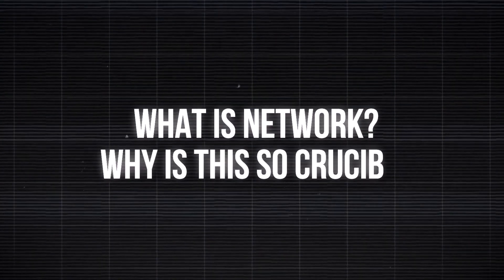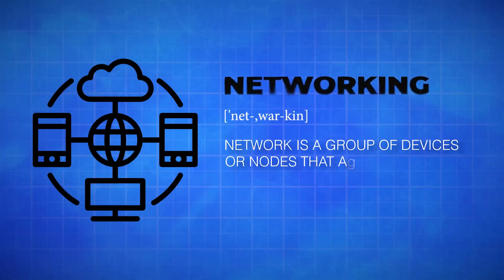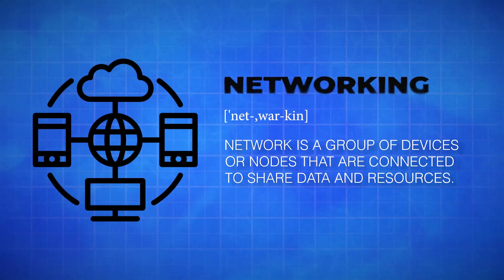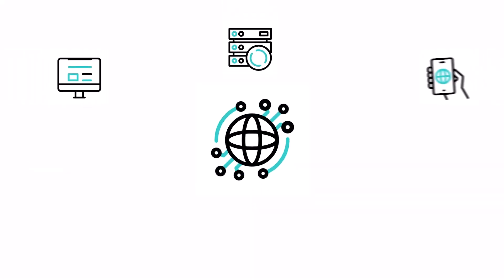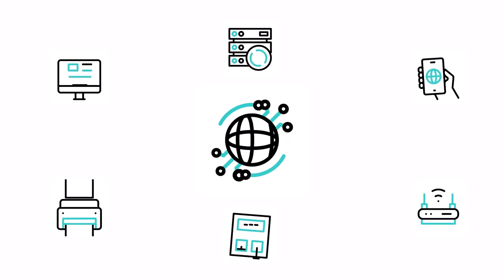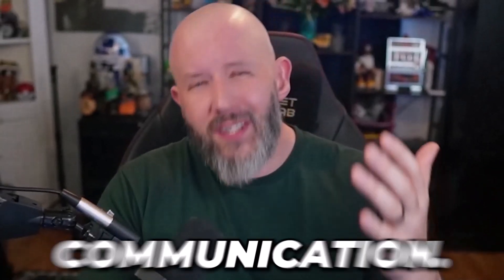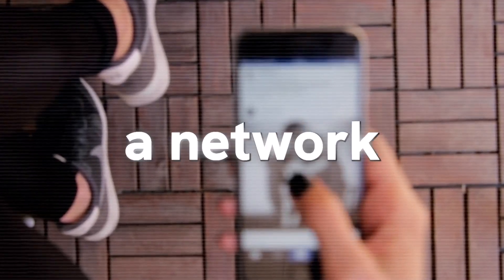But what exactly is a network and why is it so crucial? If you're studying for the CCNA or just diving into the world of networking, stick around because today we're breaking it all down from the ground up. At its core, a network is a group of devices or nodes that are connected to share data and resources. These devices include computers, servers, smartphones, printers, and networking hardware like switches and routers. The goal? Efficient communication — through a combination of hardware and software working together to transmit data. Every time you browse the internet, stream a video, or send an email, you're using a network.